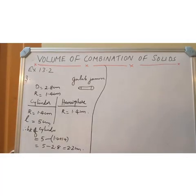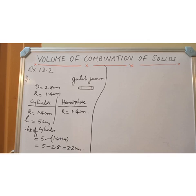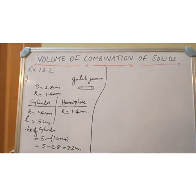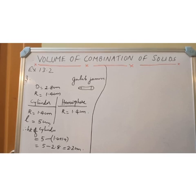Look at the third question. A Gulab Jamun contains sugar syrup up to about 30% of its volume. Find approximately how much syrup would be found in 45 Gulab Jamuns, each shaped like a cylinder with two hemispherical ends, with length 5 cm and diameter 2.8 cm.